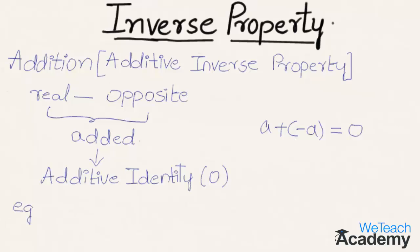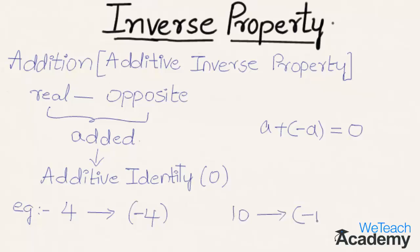For example, if 4 is the given number then the additive inverse of 4 will be minus 4. And similarly if the given number is 10 then the additive inverse of 10 will be minus 10.